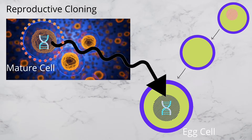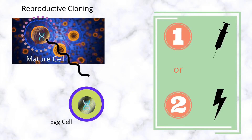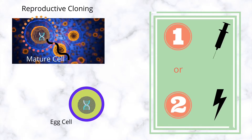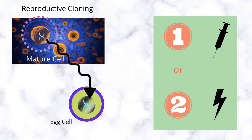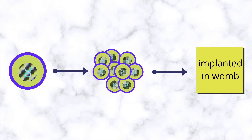The addition of genetic material from the somatic cell to the enucleated egg can be done in two ways. The first is to use a needle to remove the nucleus from the somatic cell and inject it into the egg cell without a nucleus. The second is to fuse the whole mature somatic cell with the enucleated egg using electric current. Following this, in both processes, the egg develops into an early-stage embryo and is then implanted into an adult female's womb.